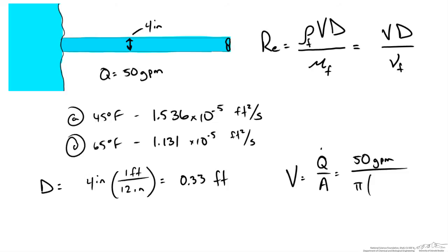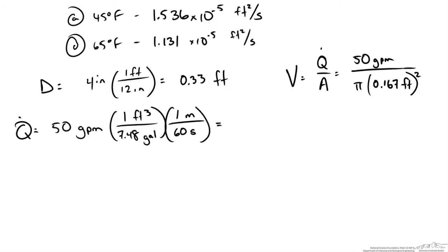Our radius is going to be 0.167 feet and that's squared. However, these units don't match up. We need to convert our gallons per minute into feet cubed per second. This is going to give us 0.111 ft³/s.